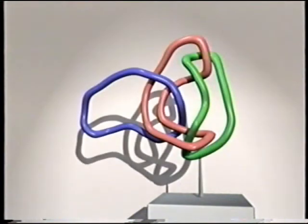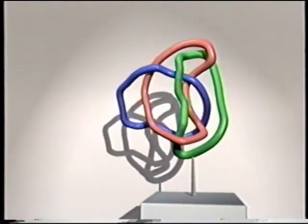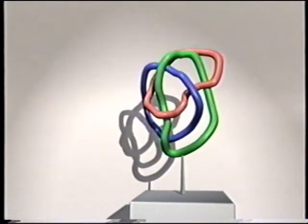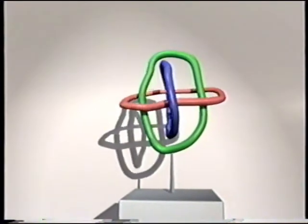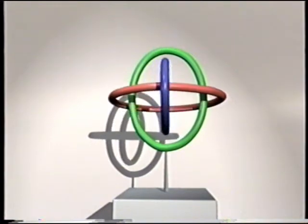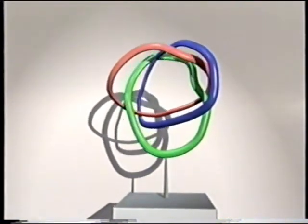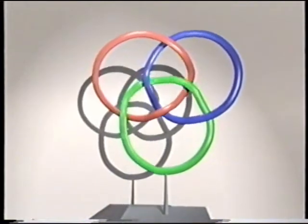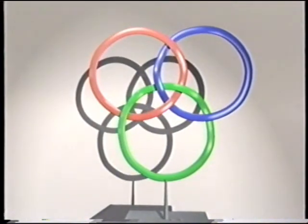Mathematicians call the union of several loops a link. By rearranging this link, we can see that the three loops are equivalent. Here is another symmetric form of the same link. In this form, it's called the Borromean rings.